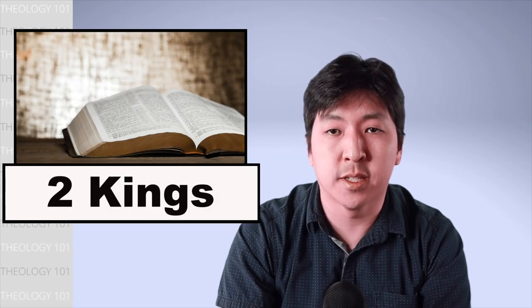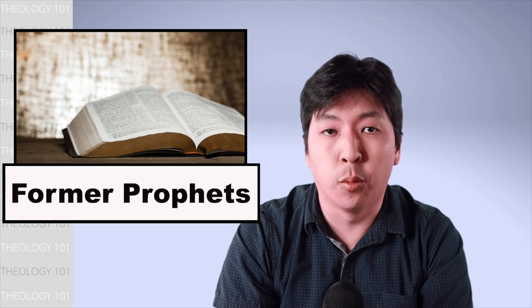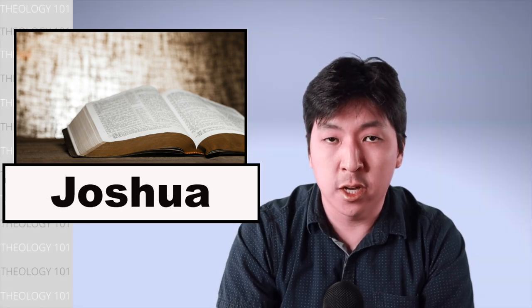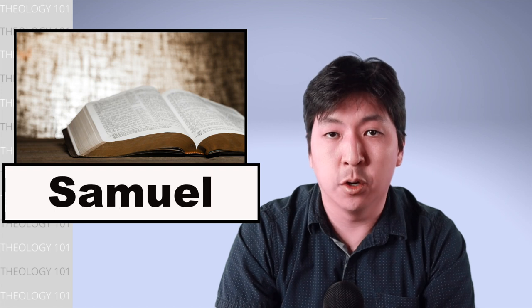2 Kings is the 12th book of the Old Testament and the 6th book of the former prophets. The former prophets consist of four historical books: Joshua, Judges, Samuel, and Kings.